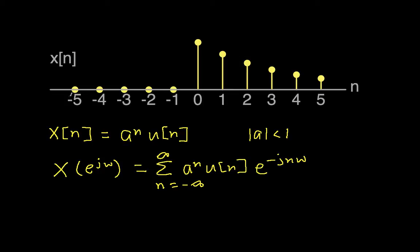So the first thing to do to simplify this is we remember that for values of n less than 0, x of n is 0. That's essentially what this u of n is doing here. So we can write this then as the summation n going from 0 to infinity, a to the n, and when n is between 0 and infinity, u of n is 1, so we can just drop that, e to the minus j n omega.